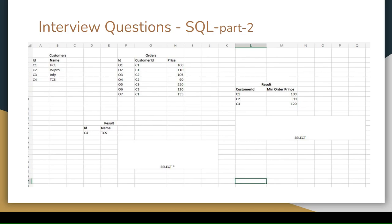We have to find the customers who have not done any transactions. You can see here customer ID C4 has not done any transactions, has not ordered something. So this is the final result we have to find out. With the help of this we have to write the query.